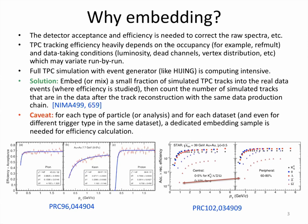If an event has a very large refMult, the efficiency could be much lower. Also, efficiency depends on data-taking conditions such as luminosity, dead channels, readout, and vertex distribution. These data-taking conditions actually vary run by run — as you guys are taking shifts, you should know more about this.